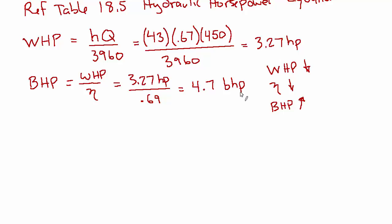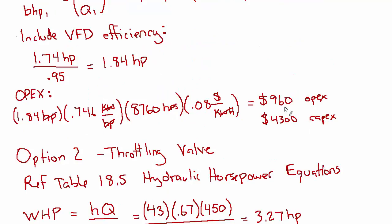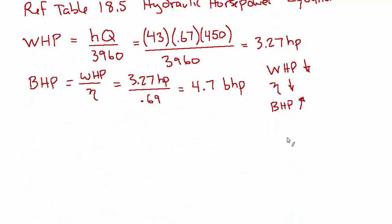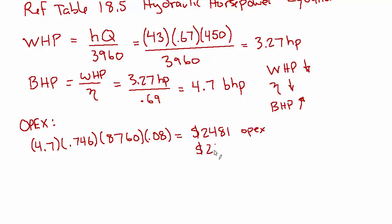Okay. So now that we have our new BHP, again, we're neglecting electrical efficiency. So we're going to assume that this is just the power that we need. And we can go through the same sort of formulation to find the OPEX as we did in option one. And I'll skip the units on this one because it's going to be all the same parameters going in. We have 4.7 for the horsepower times 0.746 times 8760 hours times 0.08 for cost per kilowatt hour. And that works out to 2481. That's the OPEX. And just for completeness, the cost was 2625 up front.